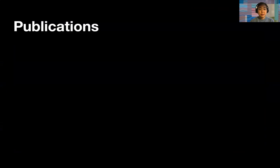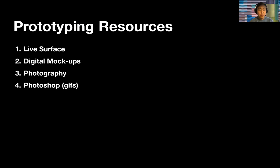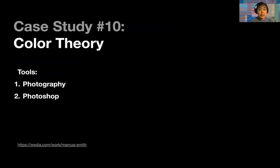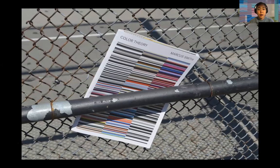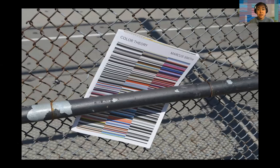Next, we're going to talk about how to document publications. This is particularly challenging right now as many of you no longer have the opportunity to print your projects in the Making Center, but there are still a lot of ways to communicate your project powerfully. Common tools are Live Surface, digital mockups, photography — which can be with your iPhone — and Photoshop. A case study called Color Theory shows a book photographed in context on a basketball court rather than in a photo studio. Having context in the background adds another element to the project.